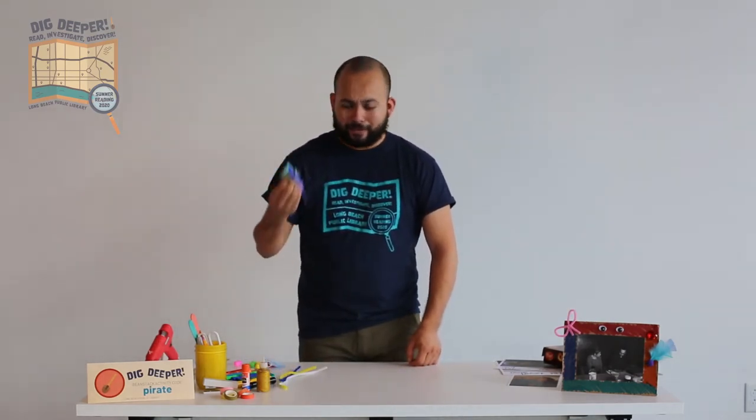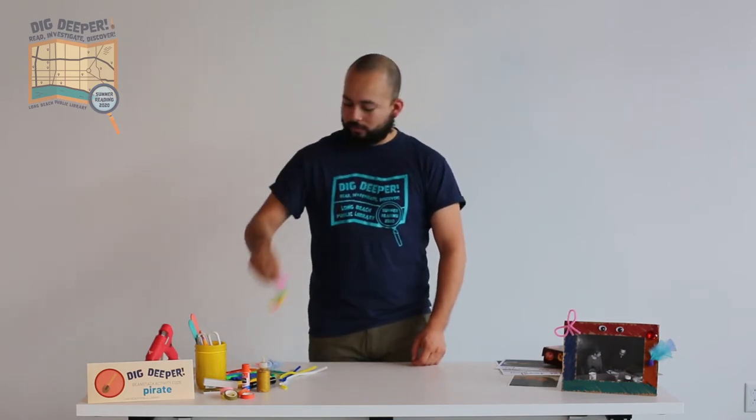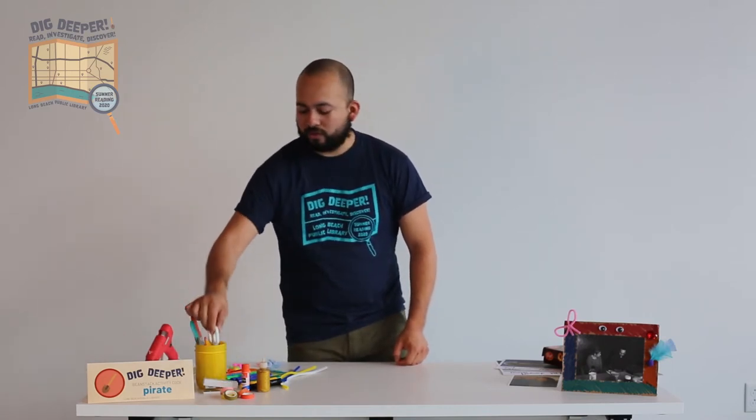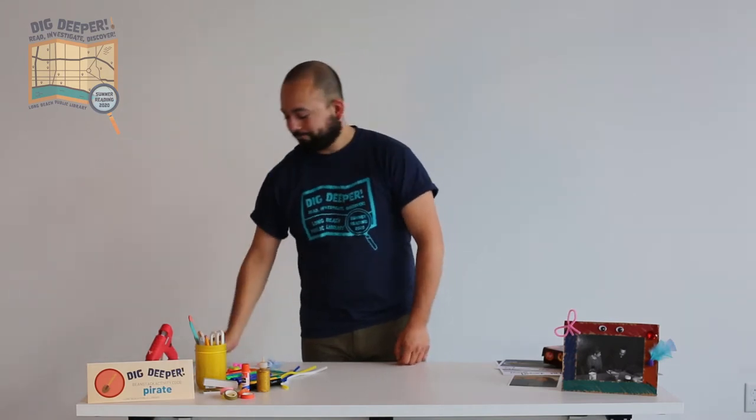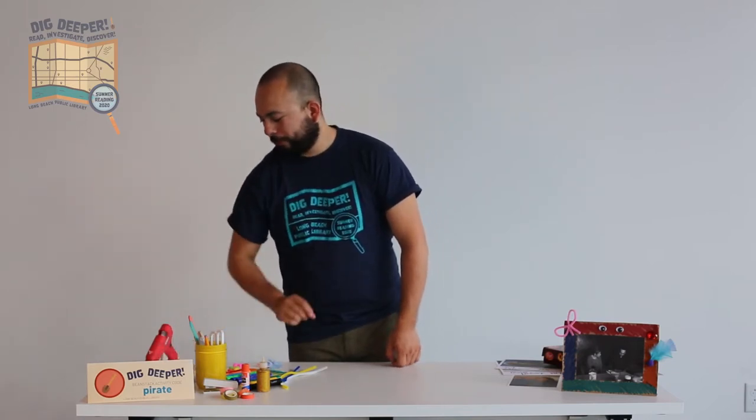Also, I've got some pipe cleaners, some feathers, these little puffy pom poms, some markers, glue stick, a little bit of glitter glue, some washi tape, scissors, a pencil, a ruler, some little gems in case you want to make it, and then I have these stickers laying around too. So I decided to use those as well.